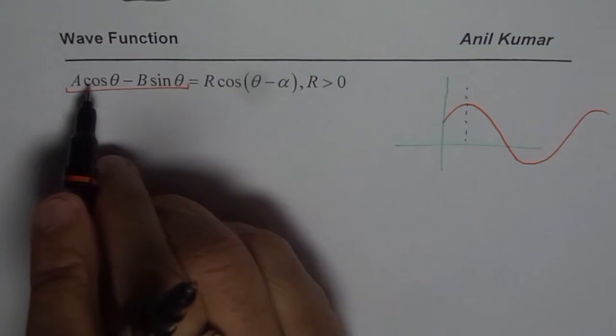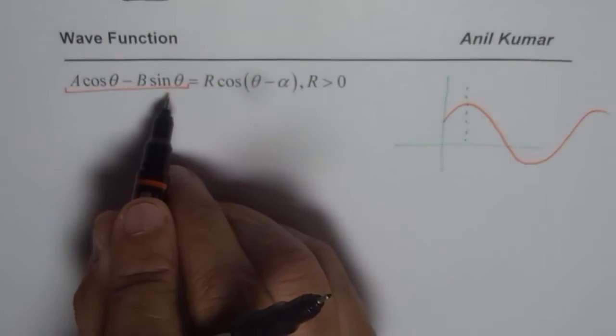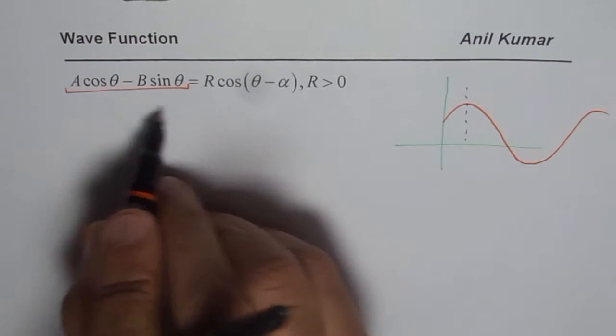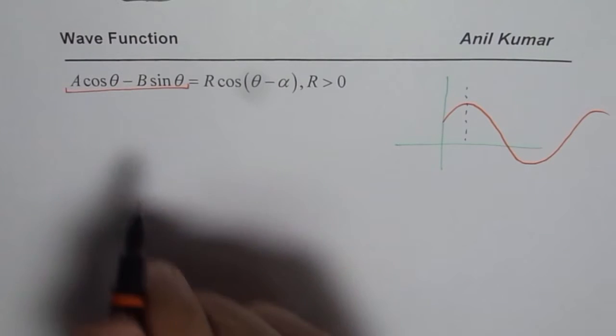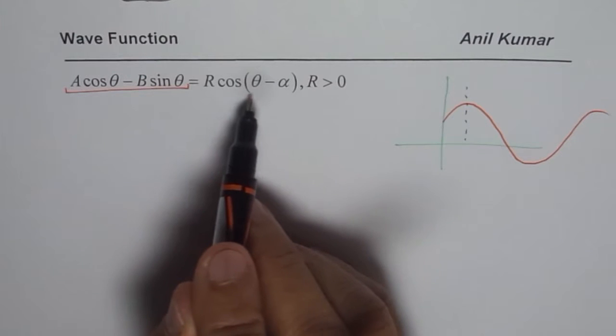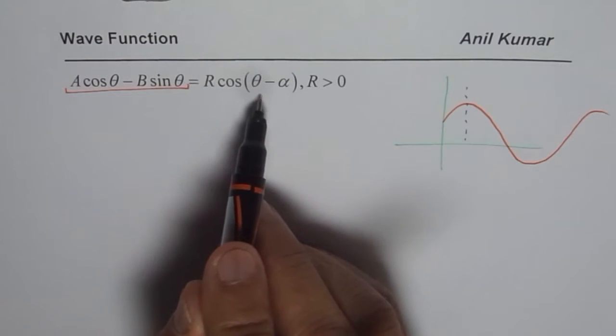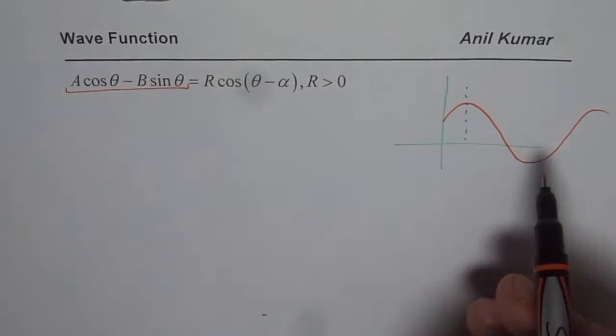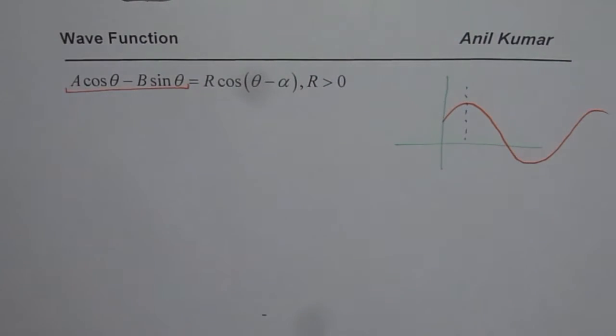Using the knowledge of compound angles we can actually write this combination of function as R cos(θ - α), a single trigonometric ratio. When we write in terms of single trigonometric ratio then we can graph it, find maximum, minimum and do a lot of stuff with that.